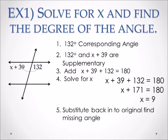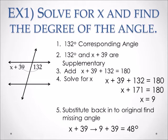Next, substitute the value of X back into the original expression to find the missing angle. Our missing angle is X plus 39, so we substitute 9 in to get 48 degrees. So our missing angle is 48 degrees.